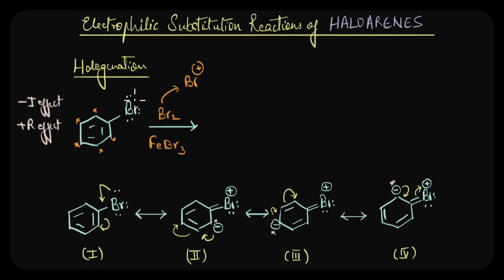So, that means even though a halogen atom is deactivating via minus I effect, it is an ortho para directing group due to the resonance effect. So as you can see that there is a tug of war between these two effects.